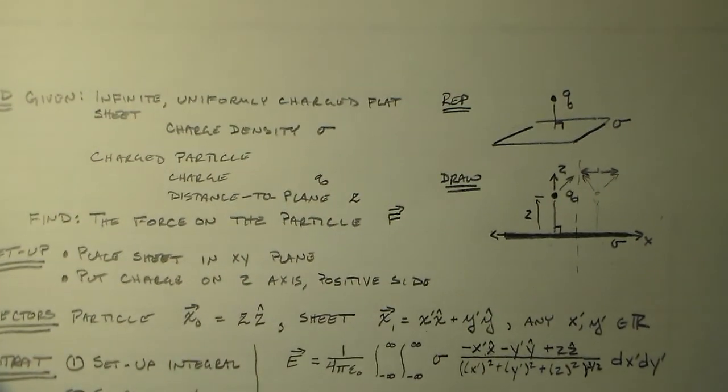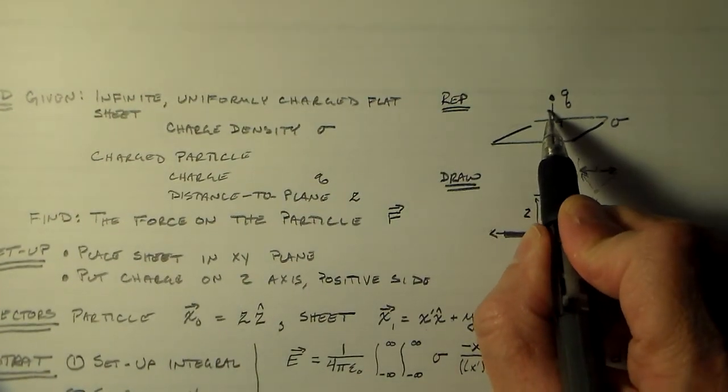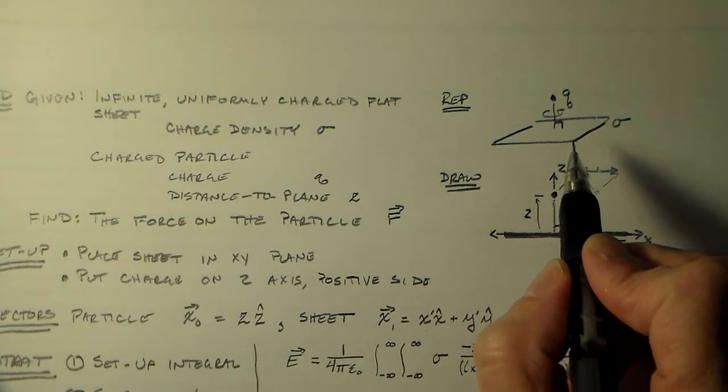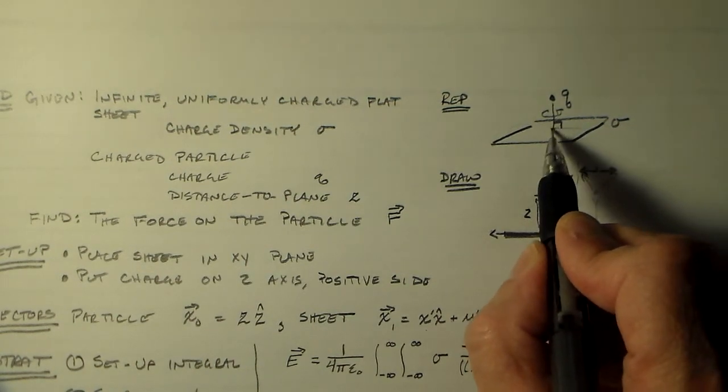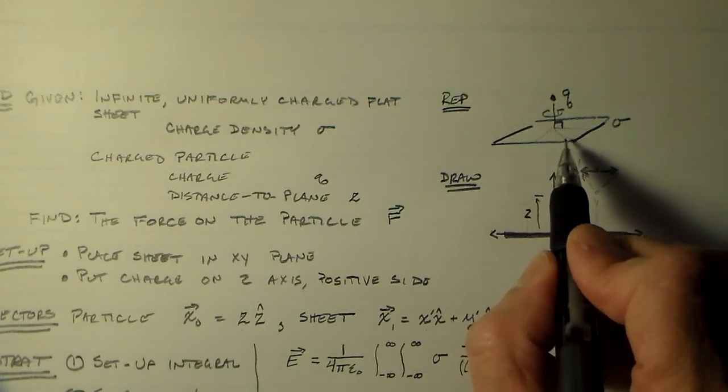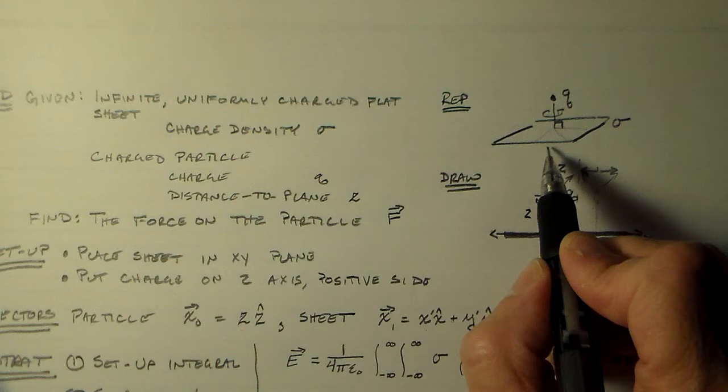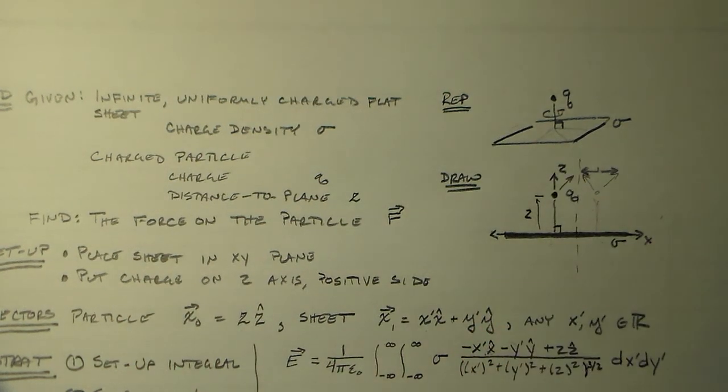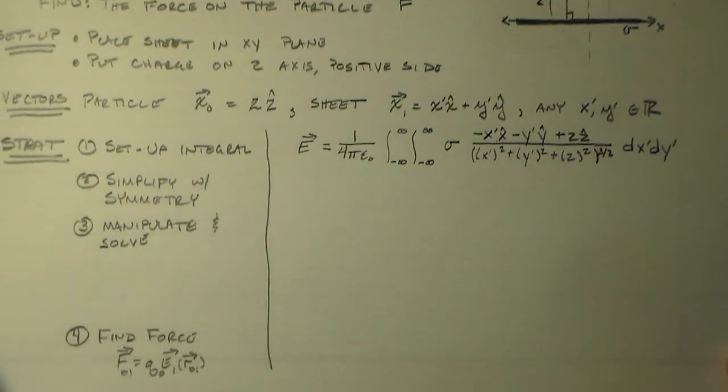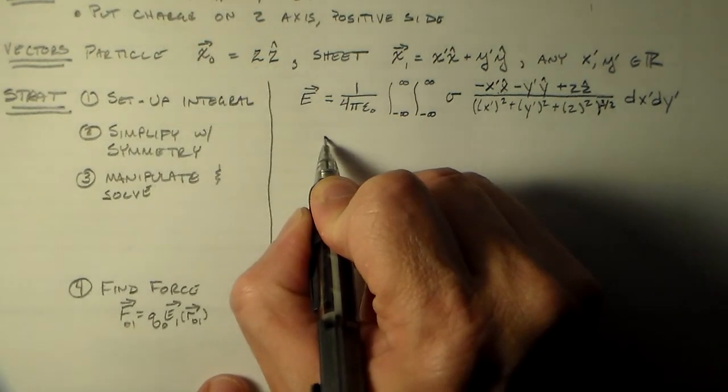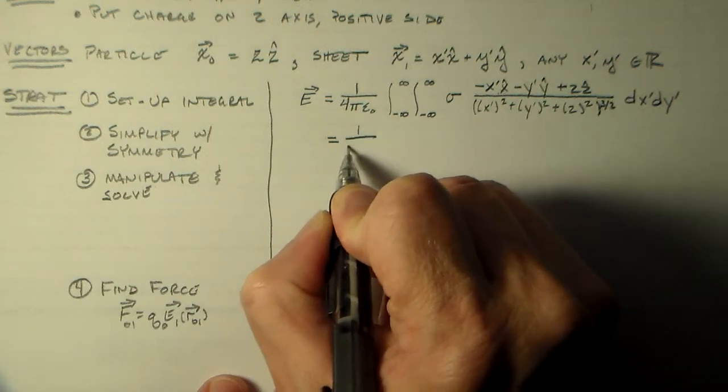One other thing we can look at is if we look up here, if we rotate this around, it also doesn't matter. It doesn't matter if we look at the X or the Y or some 45 degree angle. Everything looks exactly the same to this problem. It's got complete cylindrical symmetry. So it's probably better to transform to a cylindrical coordinate system. So that's what I'm going to do. I'm going to simplify it with those symmetries.